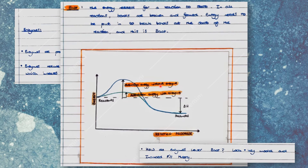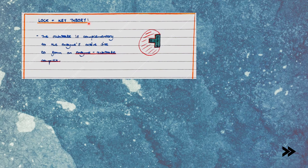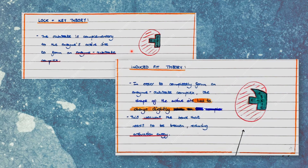How do enzymes lower the activation energy? This is explained by the lock and key model at GCSE, as well as the induced fit theory, which is an expansion of the lock and key model at A-level. At GCSE: the tertiary structure of the enzyme is such that the shape of the active site is complementary to that of the substrate, so the substrate can fit into the enzyme's active site to form an enzyme-substrate complex. At A-level, the induced fit theory states that in order to completely form an enzyme-substrate complex, the enzyme and substrate have to alter their shape slightly. This weakens specific bonds in the substrate needing to be broken, which lowers the activation energy required for the reaction, increasing the rate of reaction.